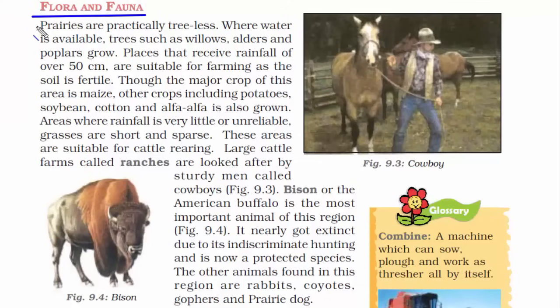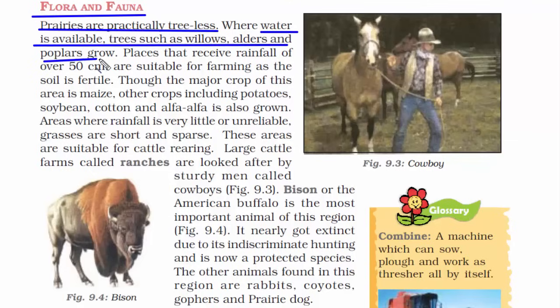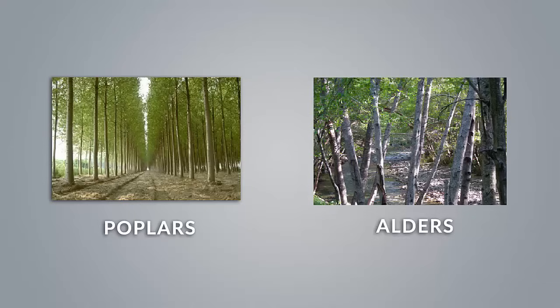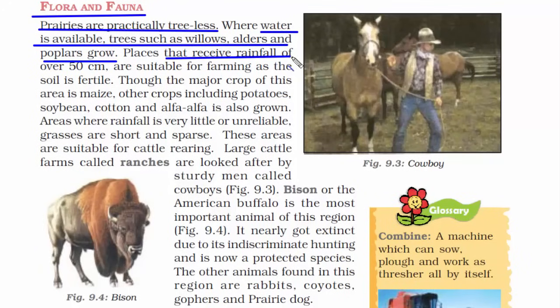Now let's read about the flora and fauna of this place. Since it's a grassland, there will be no trees — prairies are a practically treeless place. But where water is available, you will have some trees like willows, alders, and poplars. These are very thin; their bark and stem is very thin. The rainfall is moderate, around 50 centimeters, so the soil is very fertile — and if the soil is fertile, it is also suitable for farming.